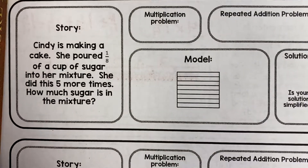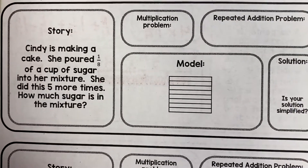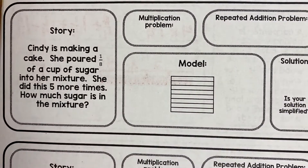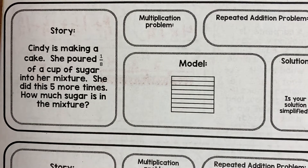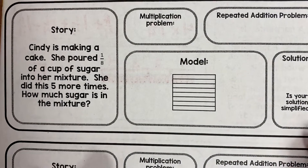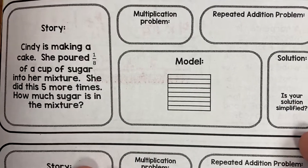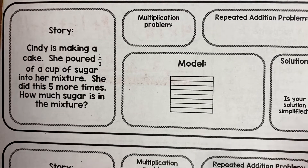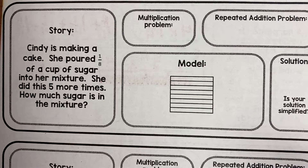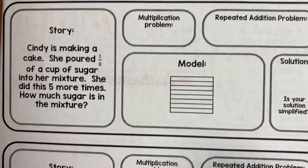Let's look at another one. This one says: Cindy is making a cake. She poured one-eighth of a cup of sugar into her mixture. She did this five more times. How much sugar is in the mixture?